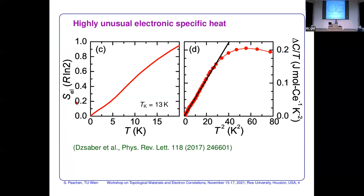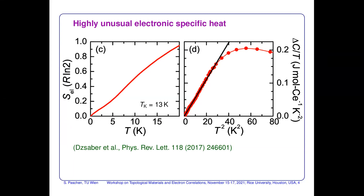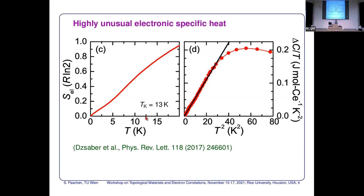Another important characteristic for heavy fermion systems is the entropy. You integrate C/T and can estimate a single-ion Kondo temperature, which tells you the highest energy scale below which you expect Kondo physics. Above 13 K the system is not in a Kondo state, so you cannot expect to see Kondo-related features at temperatures well above that.